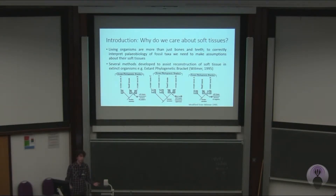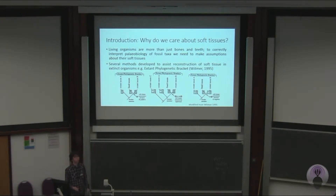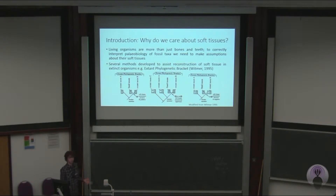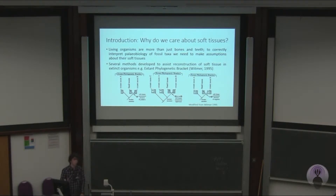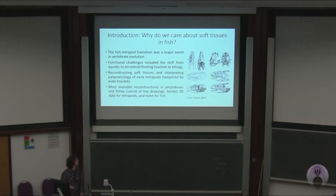There are various ways you can do that. The most famous is probably Lawrence Wittner's extant phylogenetic bracket, where you look at two taxa either side of your fossil, and based on what the soft tissues are like in your living forms, you can extrapolate back and make assumptions about what soft tissues were like in your fossil.